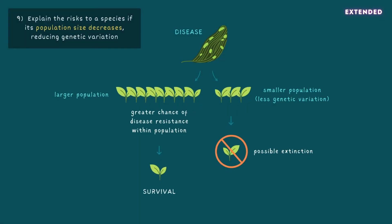Finally, you need to explain the risks to a species if its population size decreases. Smaller populations carry less genetic variation, as fewer organisms means fewer traits or characteristics in the gene pool. A decline in numbers might therefore affect the ability of the species to cope with environmental changes in the future, putting it at greater risk of extinction.